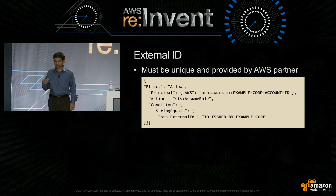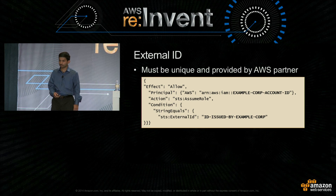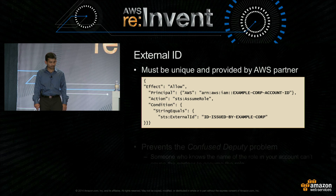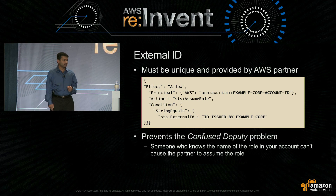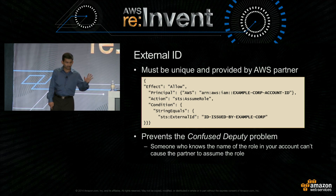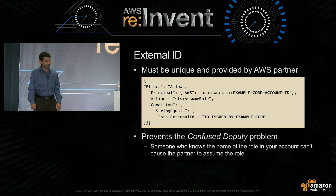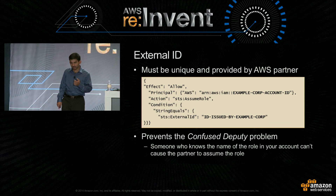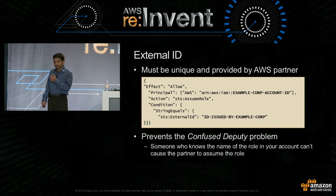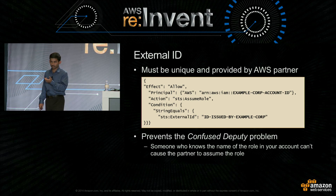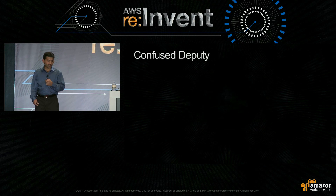So why is this important — why is it even needed? It prevents something called the confused deputy problem. Essentially, if someone just knows the name of the role in your account, that person cannot make the partner assume the role in your account just by knowledge of the role name. Let's see this in detail.